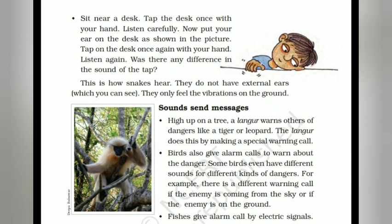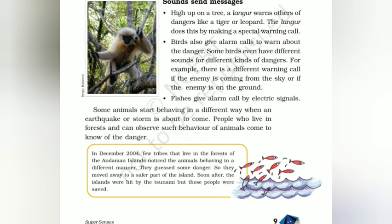इसी तरह साप जो है वो सुनते हैं — कि कहां पर शिकार आ रहा है, कहां पर attack करना है। साप के कान नहीं होते — they do not have external ears. आपने सोचा होगा कि सपेरा जब बीन बजाता है तो साप कैसे आता है। Actually वो सपेरे की आवाज़ सुनके नहीं आता — उसे लगता है कि सपेरा attack करने वाला है। वो जमीन की vibration को महसूस करते हुए सारे काम करता है।